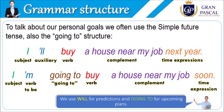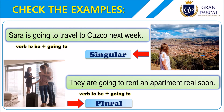We can use both of them to express ideas in the future. Actually, there is not a specific difference between them — just the time when you are going to achieve that action. For example: 'I'll buy a house near my job next year' means 'compraré una casa cerca a mi trabajo el próximo año.' But with 'going to': 'I'm going to buy a house near my job soon' — 'voy a comprar una casa pronto.' That is the difference between 'will' and 'going to.'